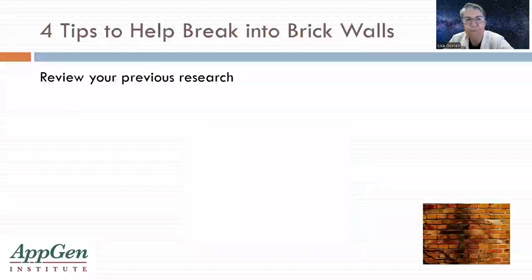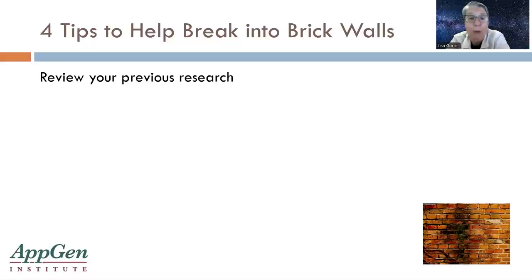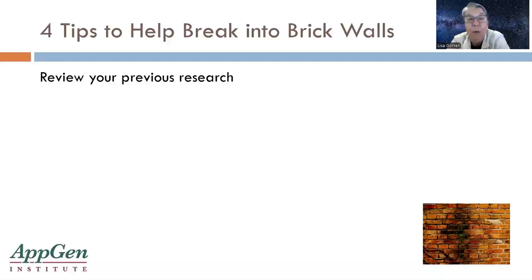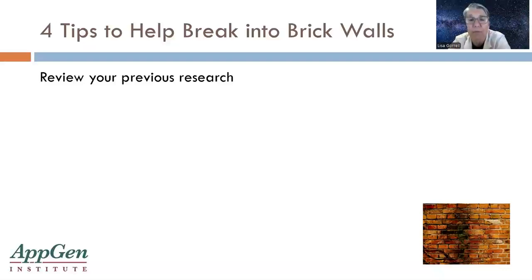First tip is to review your previous research. I do this by reviewing my notes — I reread them. Those notes you wrote down many years ago, perhaps the things you wrote down didn't make sense, but now they will because you know a lot more about your research family. I also review all of my collected documents again, making sure that I've extracted all of the information I can from them.